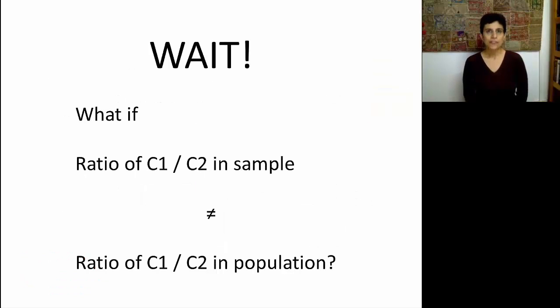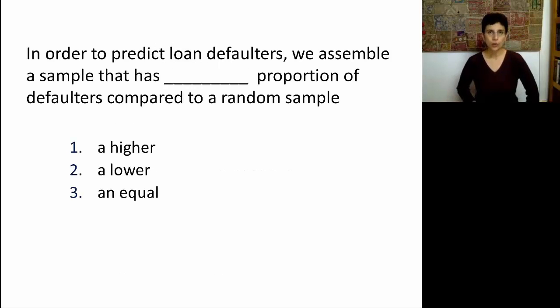What happens if the sample that we have for training our algorithm is actually different from the population where we'll be deploying this algorithm in terms of the breakdown of the two classes? How can we actually evaluate what's going to happen if we deploy such a distorted sample on a different type of population? This actually happens in practice. Think about the following question before we move on. In order to predict loan defaulters, we assemble a sample that has a higher, a lower, or an equal proportion of defaulters compared to non-defaulters as compared to a random sample that we would just draw from the population. Which one of these samples would actually be best for a data mining algorithm to be able to learn?